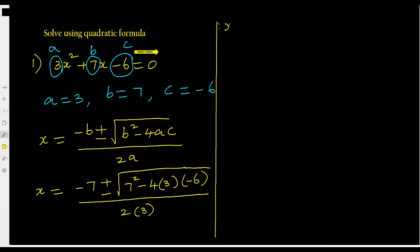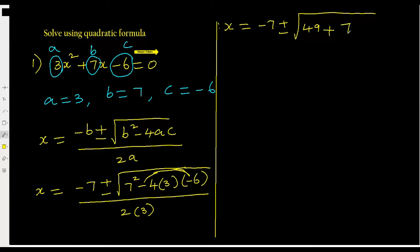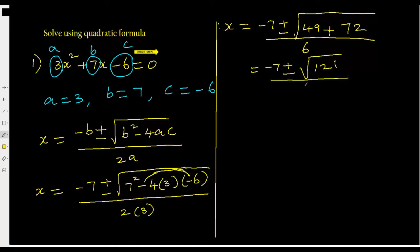Simplify the right side. No calculator needed — we can do it manually. 7 squared is 49. The two negatives in minus 4ac become positive, so 4 times 3 times 6 equals 72. The denominator is 2 times 3 equals 6. Now, 49 plus 72 equals 121, and the square root of 121 is 11 because 11 squared is 121.